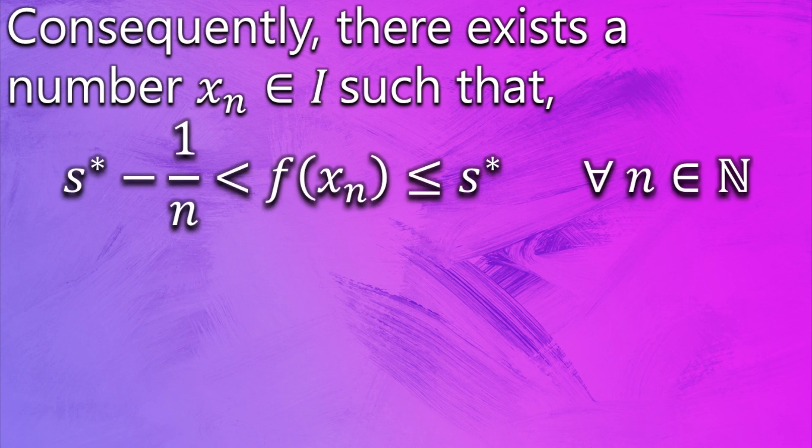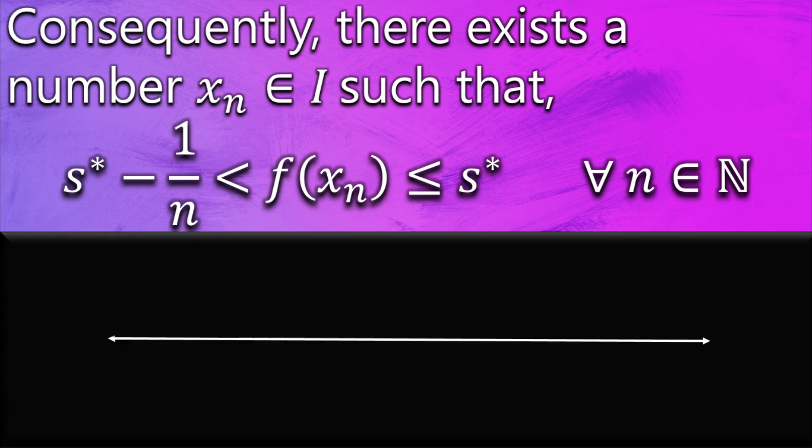To understand this, let's consider this is the set F(I) on the number line and s* is the yellow element extremely close to the set F(I) on the right side. If 1/n is subtracted from it, it gets inside the set F(I) because s* was sitting so close to the boundary of F(I).